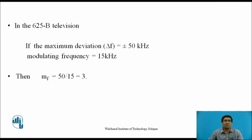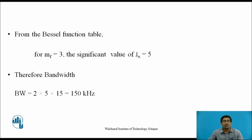Now take a similar example for the 625-line television system. If the maximum deviation is equal to ±50 kHz and the modulating frequency equals 15 kHz, then the modulation index MF = 50 ÷ 15 ≈ 3. From the Bessel function table, for MF = 3 the significant value of n is equal to 5. Therefore, Bandwidth = 2 × 5 × 15 = 150 kHz.